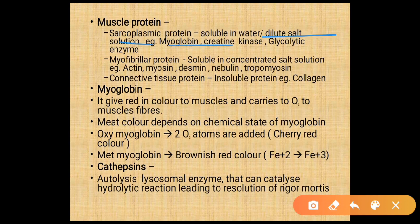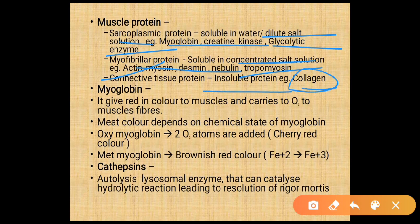Muscle proteins: sarcoplasmic proteins are soluble in water and dilute salt solutions — examples include myoglobin, creatine kinase, and glycolytic enzymes. Myofibrillar proteins are soluble in concentrated salt solutions — examples include actin, myosin, desmin, nebulin, and tropomyosin. Connective tissue proteins are insoluble — for example, collagen.